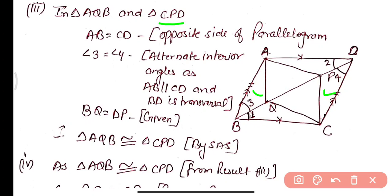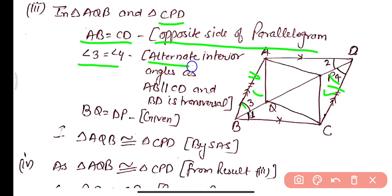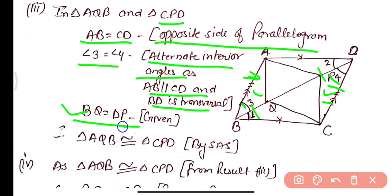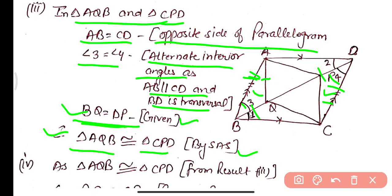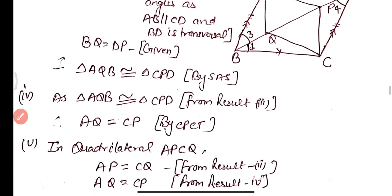Part 3: In triangles AQB and CPD, AB is parallel to CD as opposite sides of the parallelogram, with BD as transversal, so angle 3 equals angle 4 as alternate interior angles. Also BQ equals DP as given. Therefore triangle AQB is congruent to triangle CPD by Side-Angle-Side congruency.